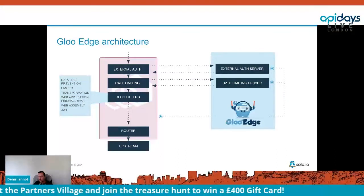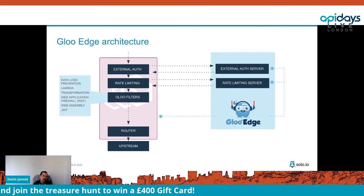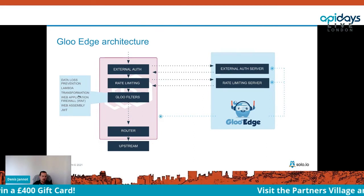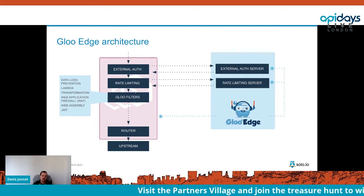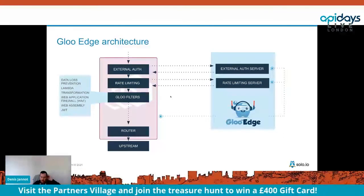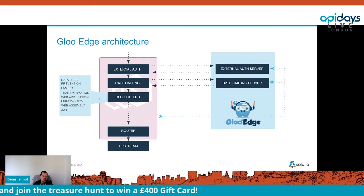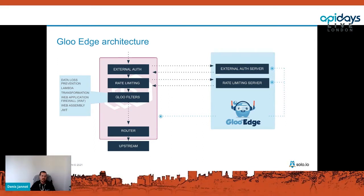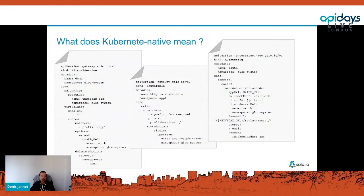Some filters are implemented directly inside Envoy. For example, we built a web application firewall filter based on ModSecurity running directly in Envoy — no external component needed. We have a filter for advanced transformation, taking data from the body and putting it in a header. We also have a JWT filter that validates JWT tokens and extracts claims to add new headers — very useful for passing authenticated user identity to the backend application.